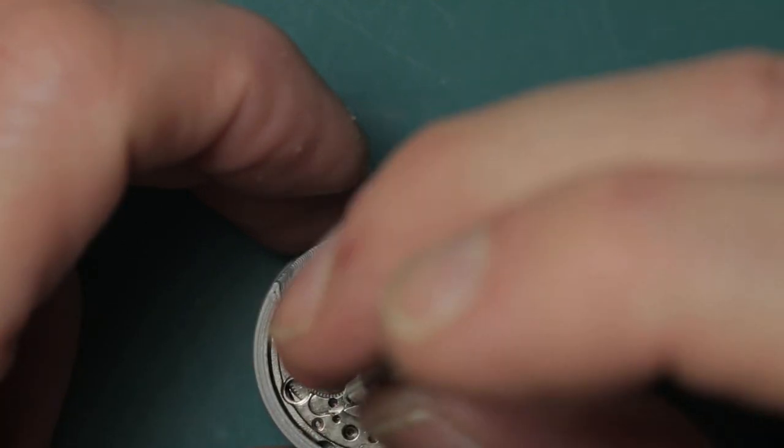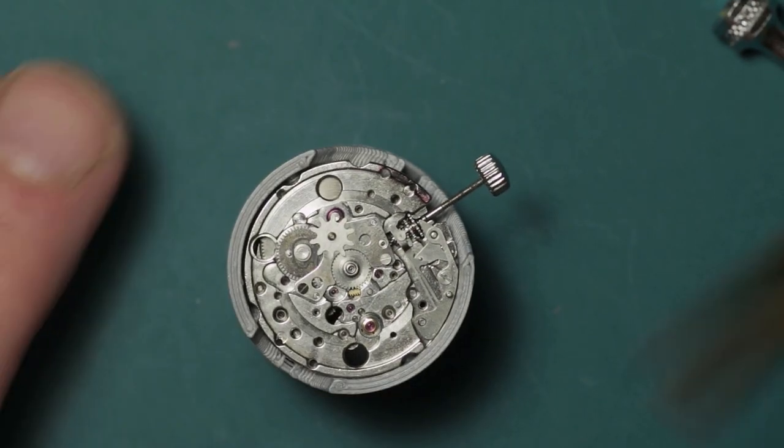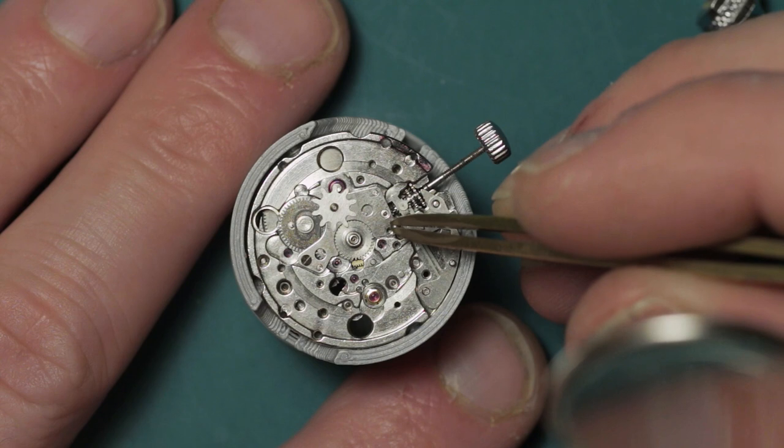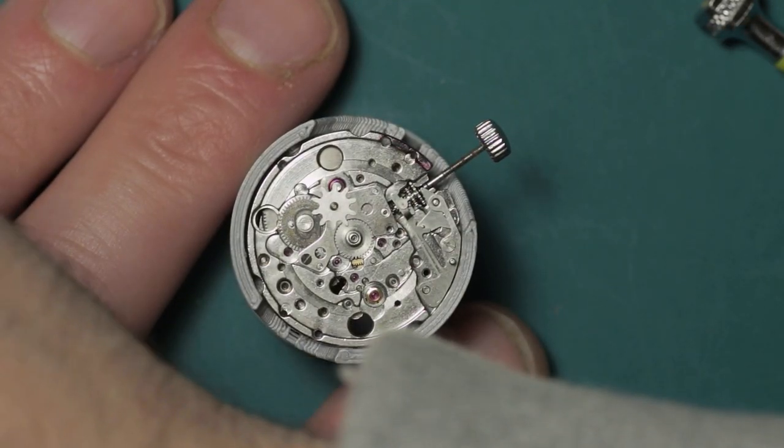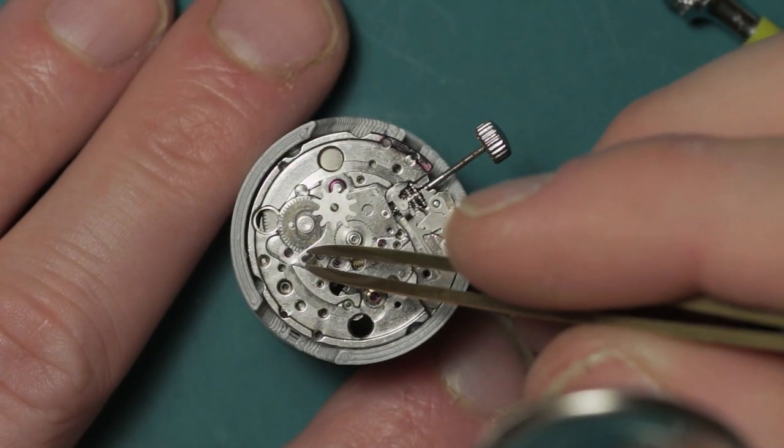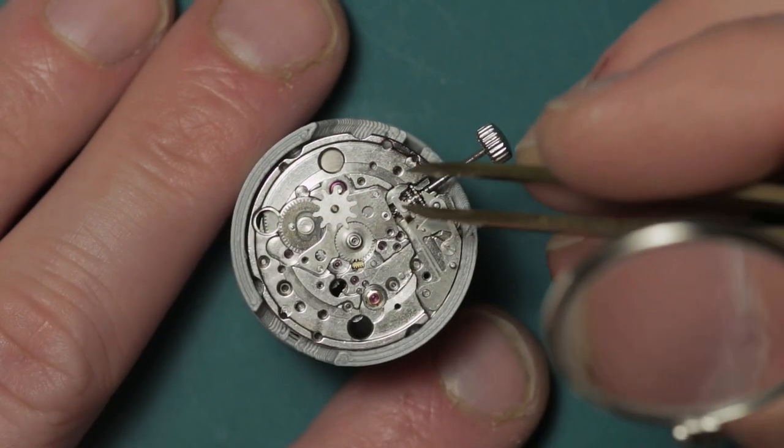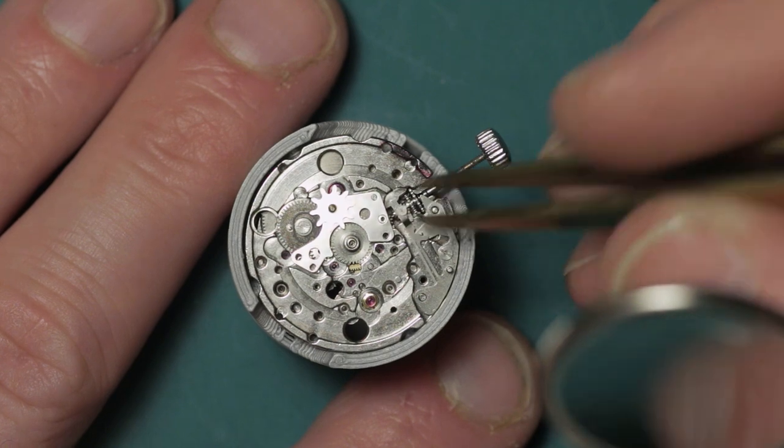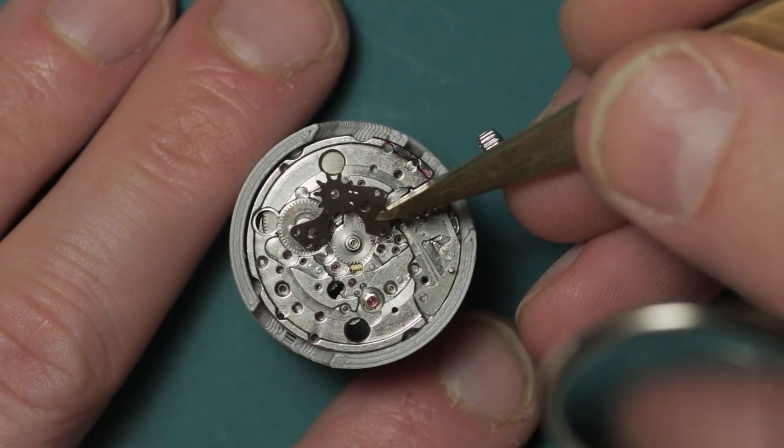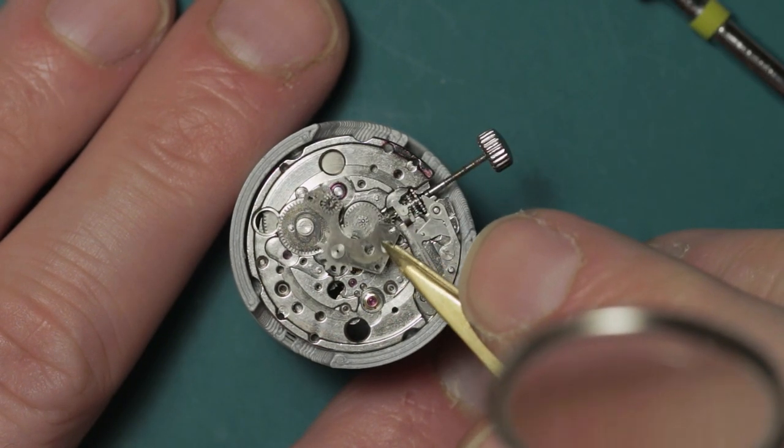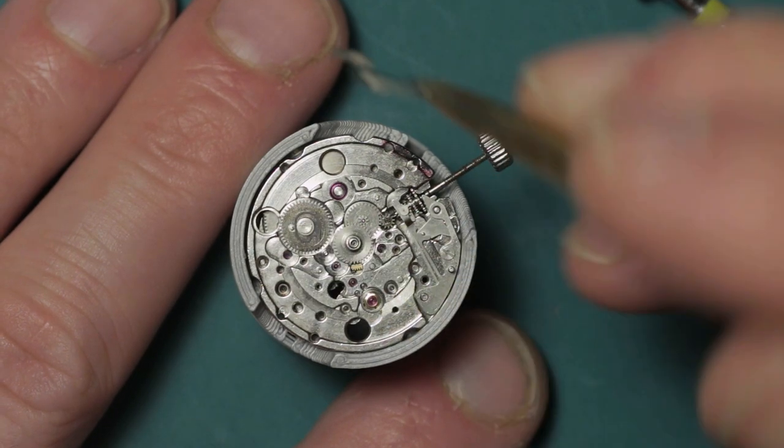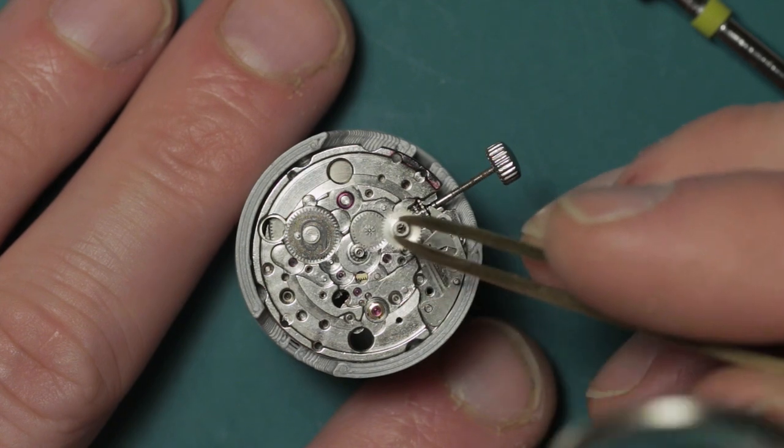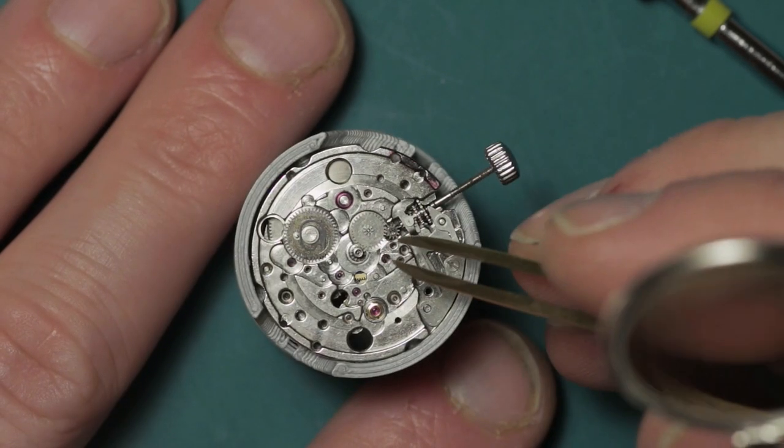This plate here is held by two screws and has the day wheel driving star riveted in place onto it. This is turned by the calendar wheel that you see in the top left, and that in turn rotates the day wheel driving star. Stuck to that plate is the intermediate wheel, which sits between the hour wheel and the calendar driving wheel.